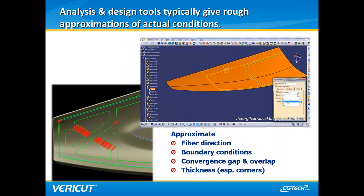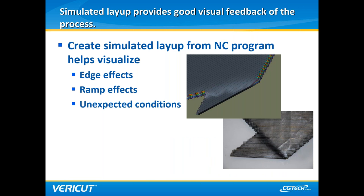There are many things the nominal design doesn't always account for — fiber direction at every point, minimum length of material pieces, convergence, variation from nominal corner thickness, and more. Even designs that attempt to include this information are often only approximations. The more accurately we can simulate the actual process, the better chance we have of avoiding undesirable results. By simulating and analyzing material placement by the actual machine via NC code, results are much more accurate to what quality inspectors will find on the real shop floor. Here we have a picture of our simulated layup compared to the actual material placed, showing the accuracy of our simulation.